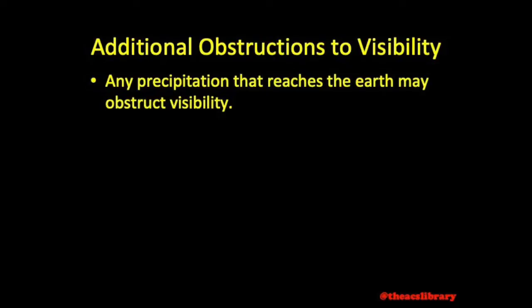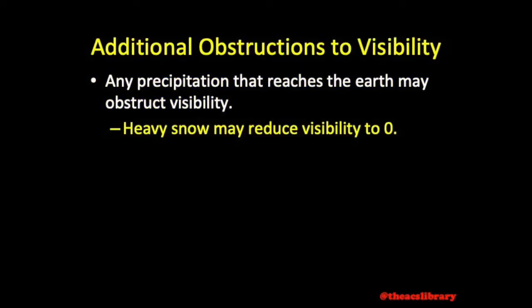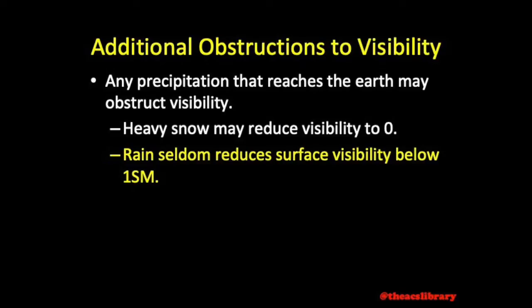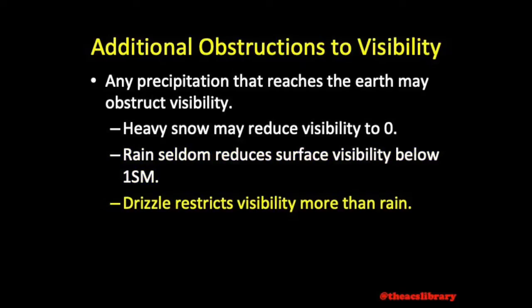Moving on to additional obstructions to visibility: any precipitation, whether liquid or solid, that reaches the earth may obstruct surface visibility. Heavy snow may reduce visibility to zero. Rain seldom reduces surface visibility below one mile except in brief heavy showers. Drizzle usually restricts visibility to a greater degree than rain. When drizzle changes to light rain, visibility usually improves because the droplet size increases.